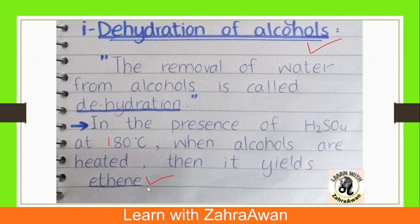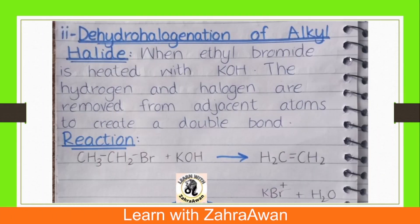The second method is dehydrohalogenation of alkyl halide. We take an alkyl halide molecule and remove hydrogen and halogen from it to get an alkene. Using ethyl bromide, through this elimination reaction, we produce an ethylene molecule.